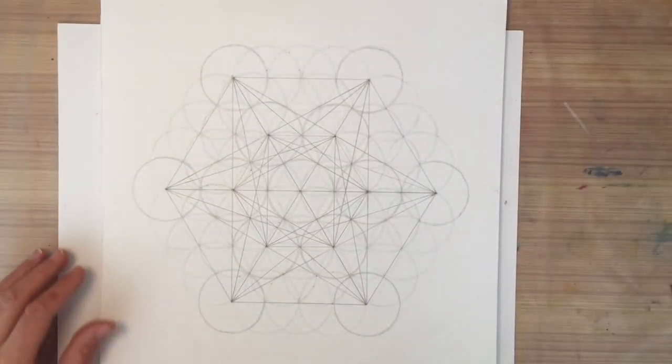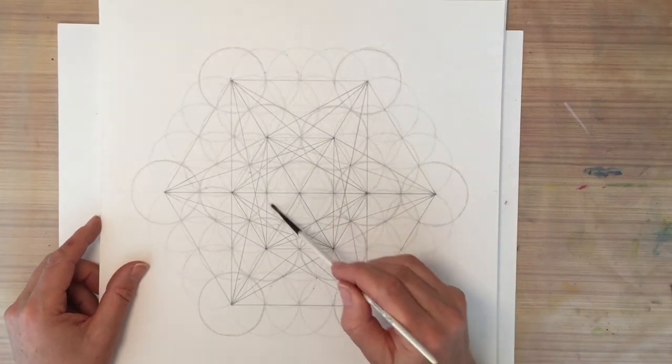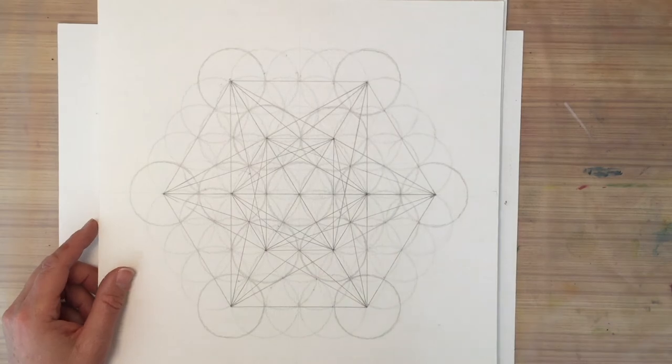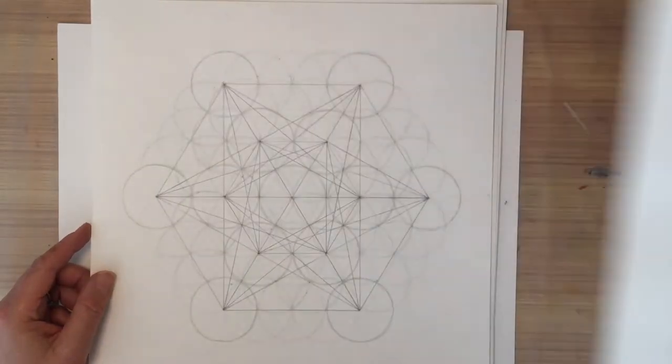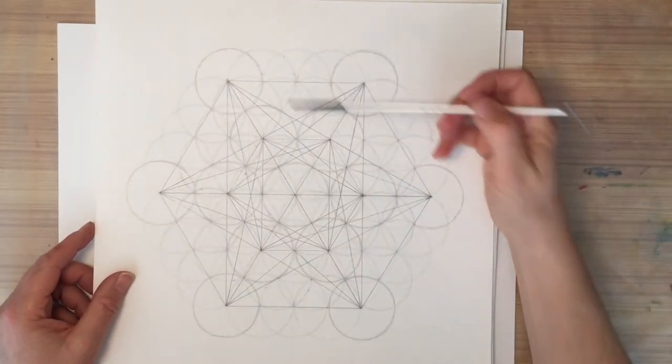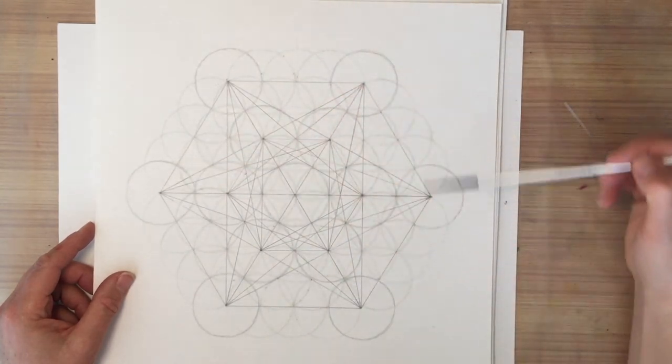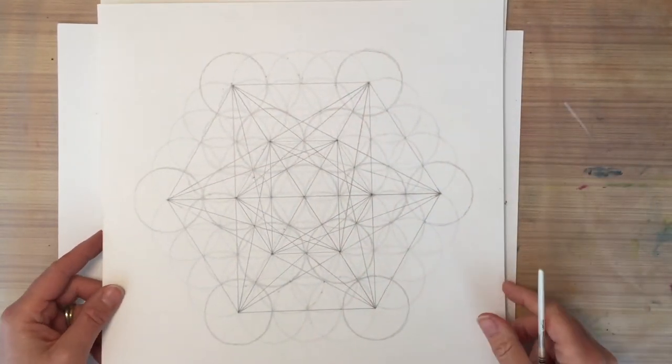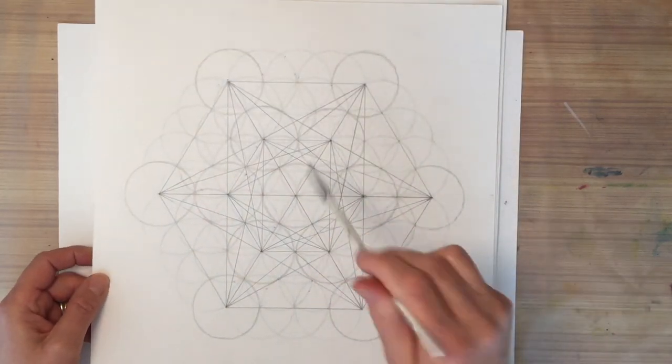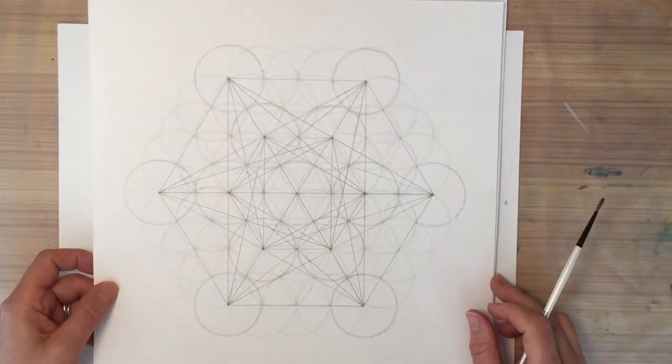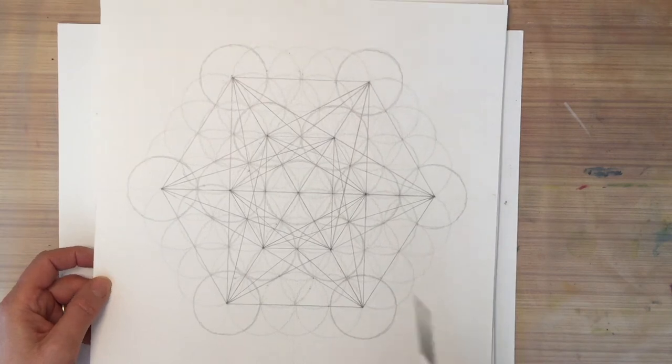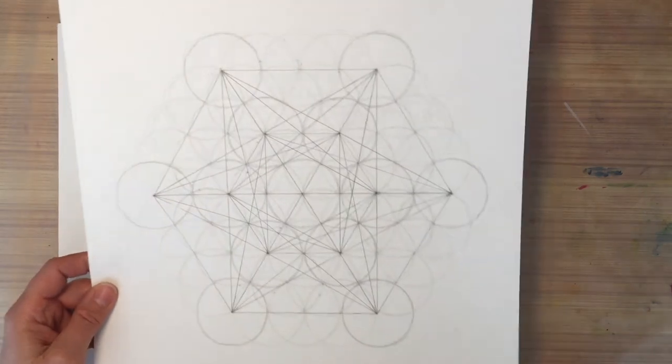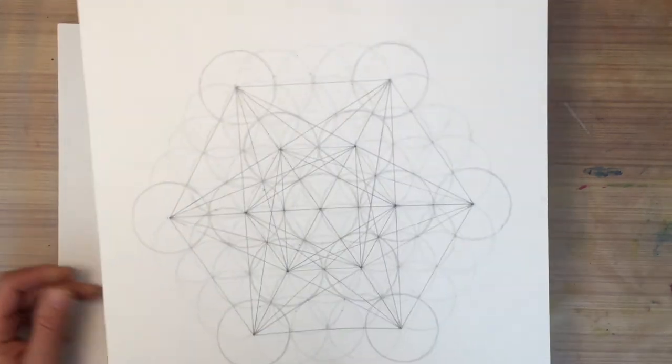And then when you start with the flower of life, which is really faint, you can hardly see it in there, you draw it all out just like I did in this one. But this one I drew all of the connecting geometric lines to make this really beautiful shape. And in there is the Metatron's cube. I haven't painted this one up yet. I'm just enjoying the work I put into it. And I didn't want to cover it with paint yet. But I will at some point.